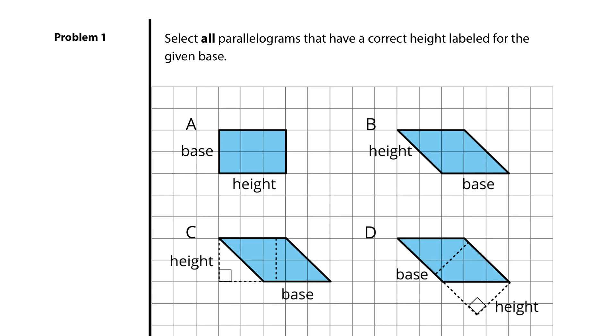If we look at A, the base and the height does indeed meet at a right angle, so A is a solution. B, the height and the base meet at this not right angle, so B is not a solution. C, the height and the base meet here at the right angle, so C is a solution. And D, the base and the height meet at this right angle, so D is a solution as well.